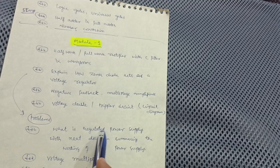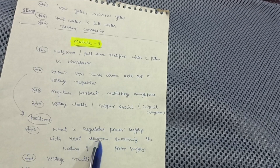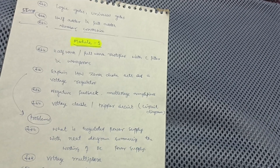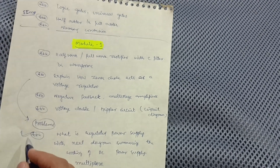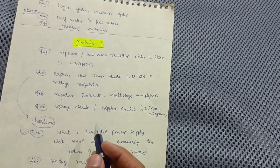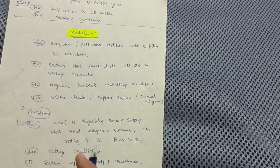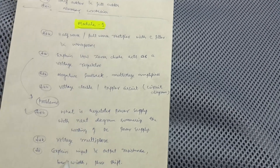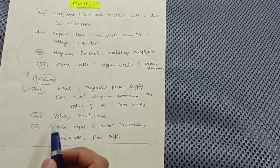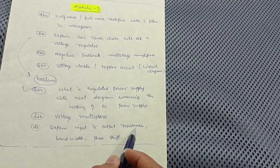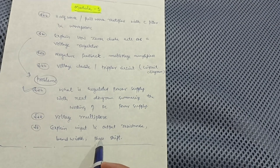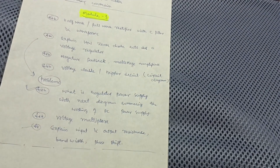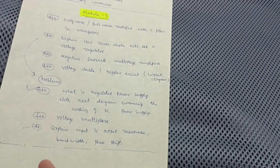In Module 1, also cover: how Zener diode acts as a voltage regulator, negative feedback, multi-stage amplifiers, and voltage doubler and tripler circuit diagrams. If you are comfortable with Zener diode, go through its problems. Cover regulated power supply with a neat diagram and the working of DC power supply — its block diagram will appear in the examination. Also cover voltage multipliers, and explain input and output resistance, bandwidth, and phase shift.